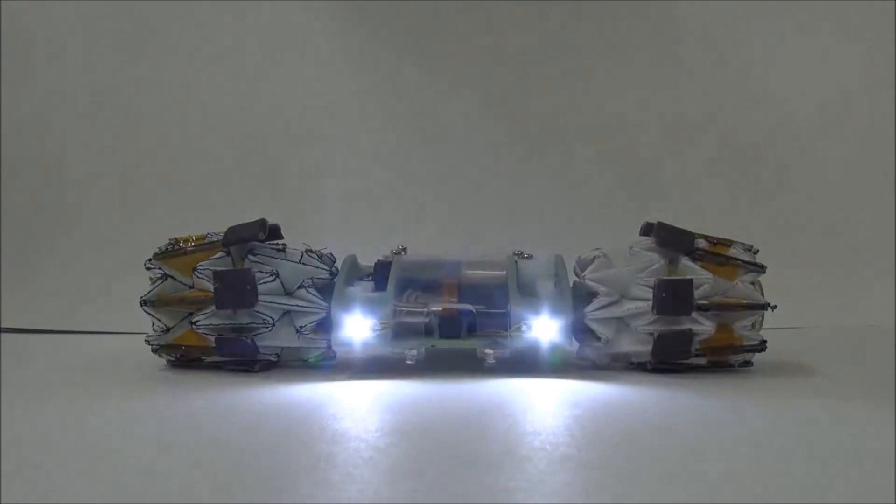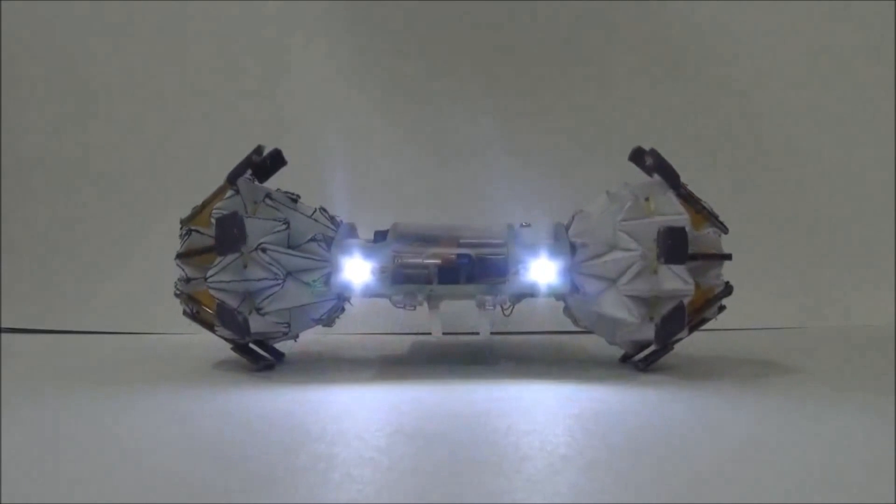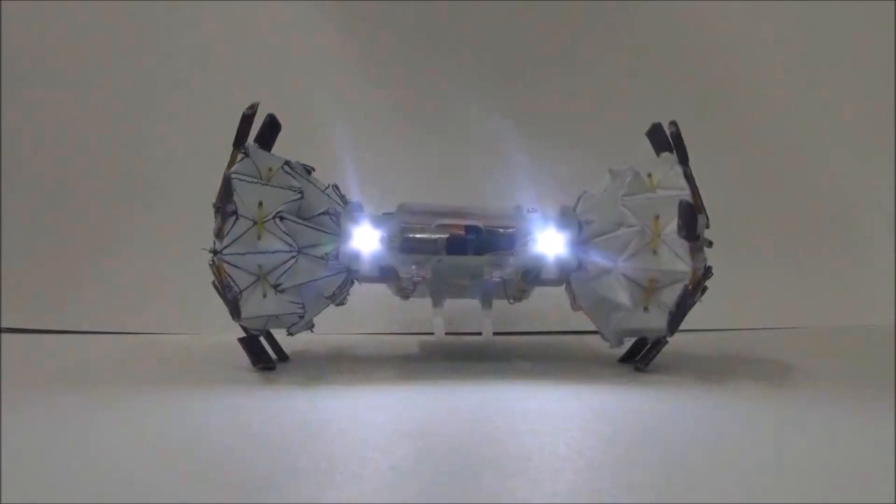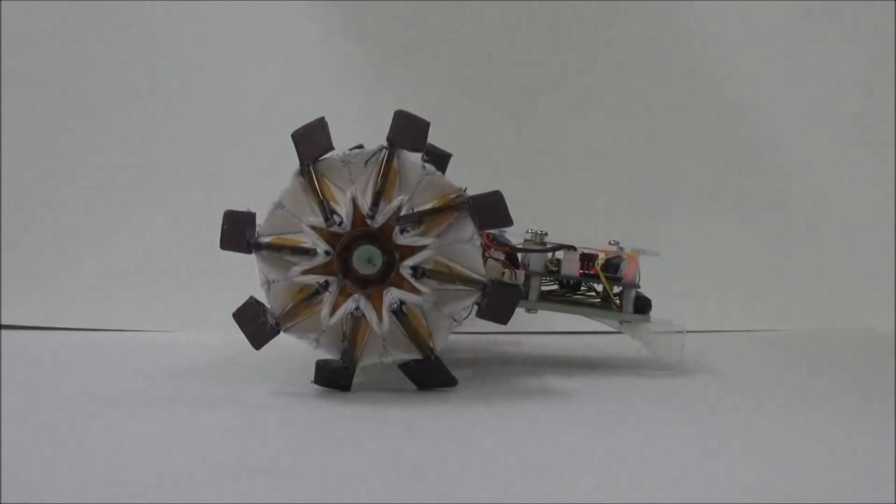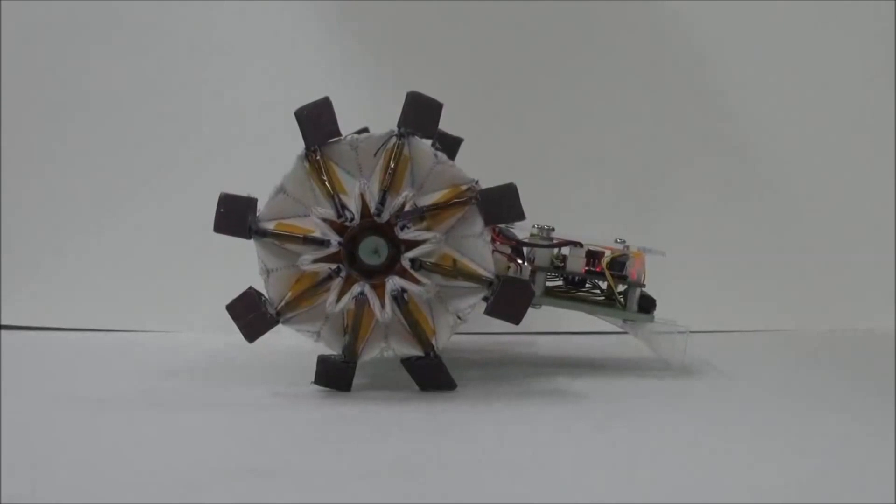Using this fabrication method and mechanisms, we built an origami-wheeled robot. This robot has robust wheels at both deformed and undeformed states. And the gear DC motor enables fast and robust deformation of the wheel. Now please enjoy the demo video.